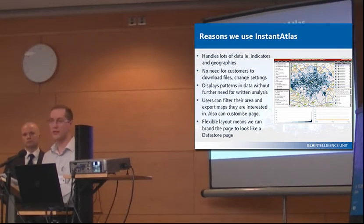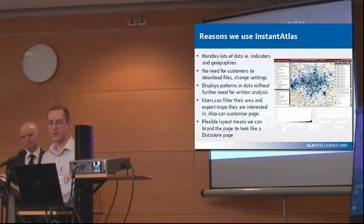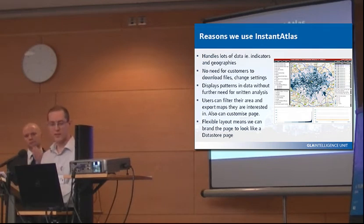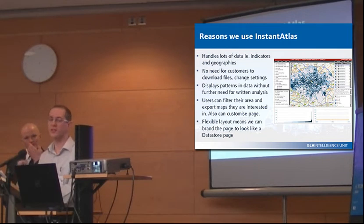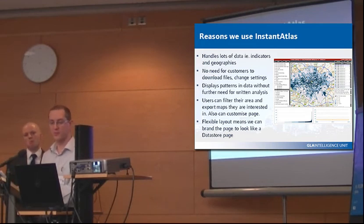There's no need for our customers to download any extra files — it's all just there on the screen. We don't need them to change any settings. We actually brand the page like a Datastore page, so you can see the same red and black and grey banding at the top of the page, making it look like a Datastore page itself. That's really important to us. We can display the patterns in the data without any further need for analysis — if we drew out certain aspects of the data, it might actually lead to us being accused of political bias. So it's important to just show the data and let people make their own judgements from the patterns on the bar chart, line chart, and map.